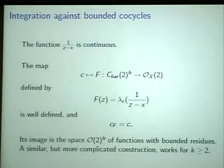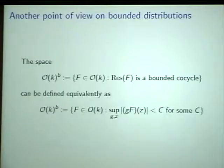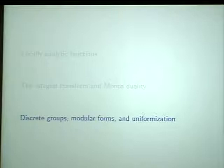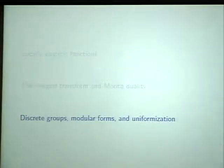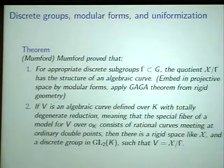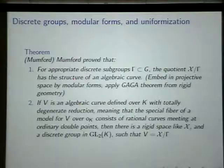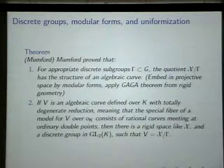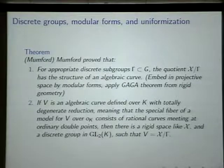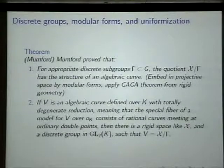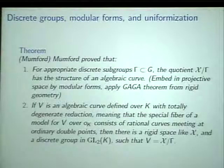There's a similar but more complicated construction in higher weight. A lot of this theory was developed with a particular application in mind. The whole notion of p-adic uniformization and the p-adic upper half plane is originally due to Mumford, whose interest was in generalizing the Tate elliptic curve. What Mumford proved is that you can find discrete subgroups of GL_2(Q_p), and if you take the quotient of the p-adic upper half plane by these discrete groups, what you get is an algebraic curve. You construct modular forms for the discrete group gamma on X, construct enough to get a projective embedding, and then apply rigid analysis to prove it's algebraic.